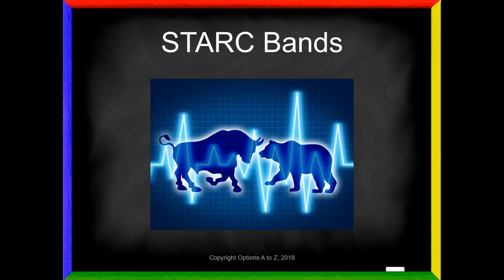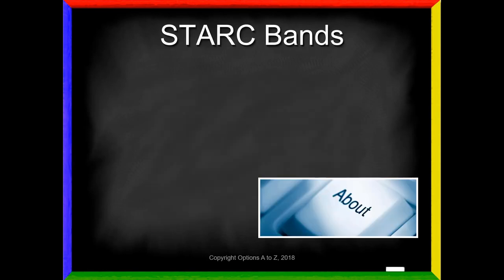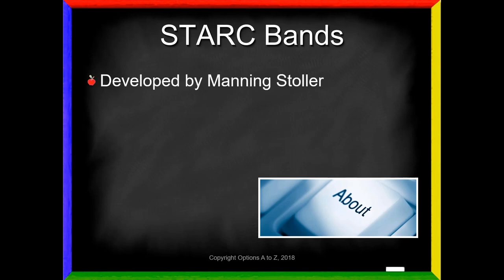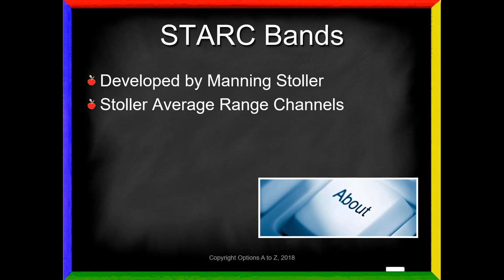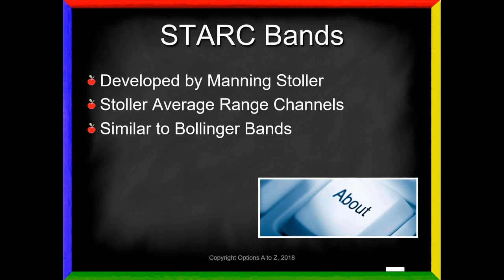So now that you understand Wilder's Average True Range, let's take a look at STARC Bands. STARC is kind of an interesting word — it was developed by Manning Stoller, and it is simply an acronym for Stoller Average Range Channels. He uses this term "average range channels," but you're going to find out it's really Wilder's Average True Range.